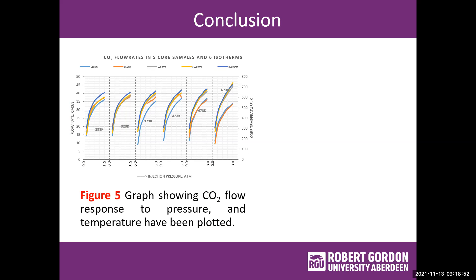We found that when we plotted the data, the graph is a model graph consisting of six sub-graphs. Each of the sub-graphs is demarcated by a dotted vertical line, and each of the graphs represents an isotherm. If we observe here, you see that the X-axis is the injection pressure and the Y-axis is the fluid flow rate.